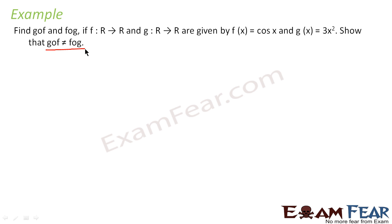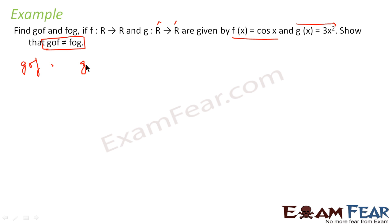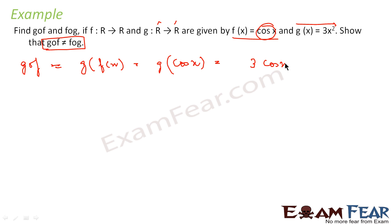As I told you, gof is not equal to fog in most cases. Here we have to prove that with some example. So here we have a function f from R to R where f(x) = cos(x), and function g(x) = 3x², with domain and co-domain R to R. To find gof, that is g of f(x), we substitute: g of cos(x) = 3 times cos(x) squared, which is 3cos²x.